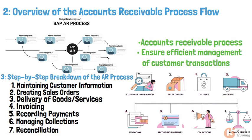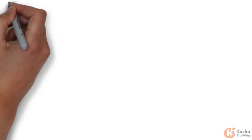Step 7: Reconciliation. Regularly reconcile accounts receivable records with bank statements to ensure all transactions are accurately recorded and discrepancies are addressed promptly.